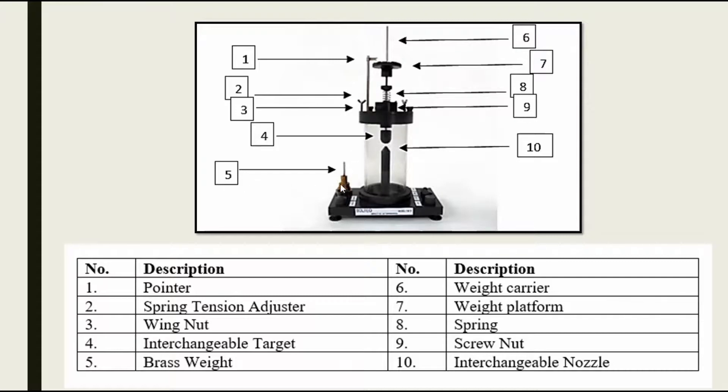Fifth is the brass weight, number six is the weight carrier, number seven is the weight platform. The platform is for us to put the brass weight on it. Number eight is the spring, which controls the height of the target.